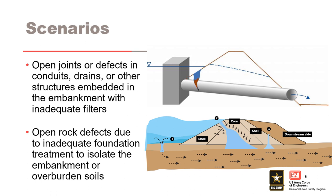Voids or sinkholes can form upstream, within the central portion of the dam, or on the downstream shell. The most critical location for a void to form is beneath the impounded water in the reservoir, as this leads to a potential introduction of the full hydraulic head to a more downstream location. Internal migration into rock defects is the most common scenario for USACE dams, while internal migration into defects in conduits is the most common scenario for USACE levees.